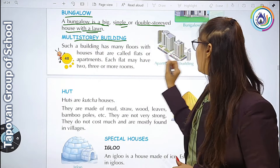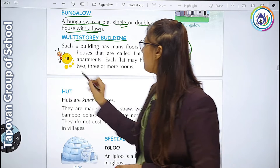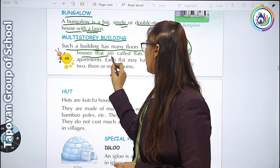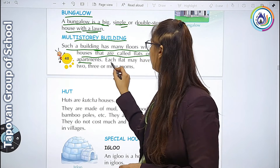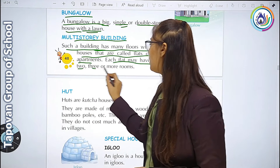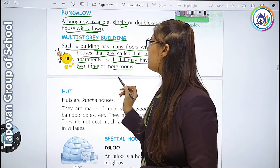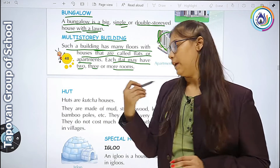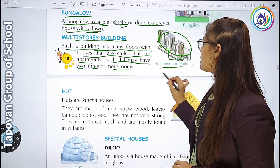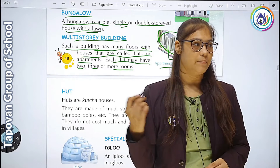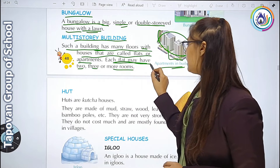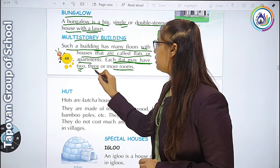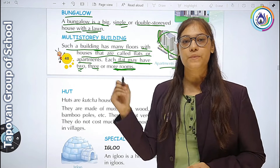Multi-storey building - ऐसी building में क्या होती है? Such a building has many floors with houses. There are four flats or apartments. Each flat may have two, three or more rooms. बहुत सारे floors होते हैं, उसमें apartment भी होते हैं जिन्हें flat भी कहते हैं. Each flat में two, three or more rooms available होते हैं.